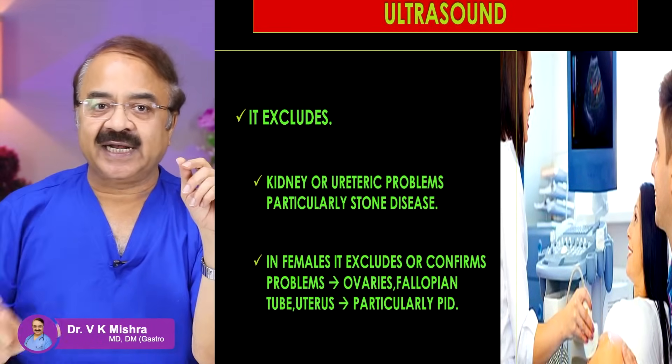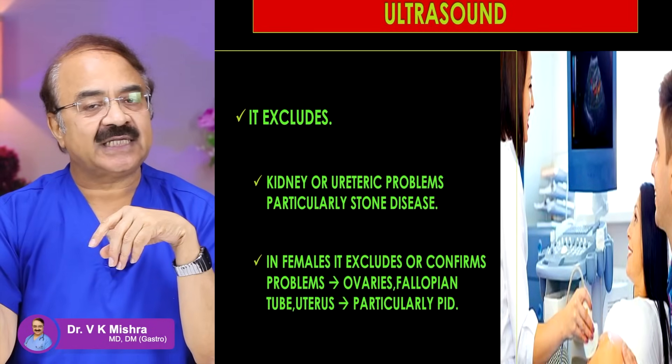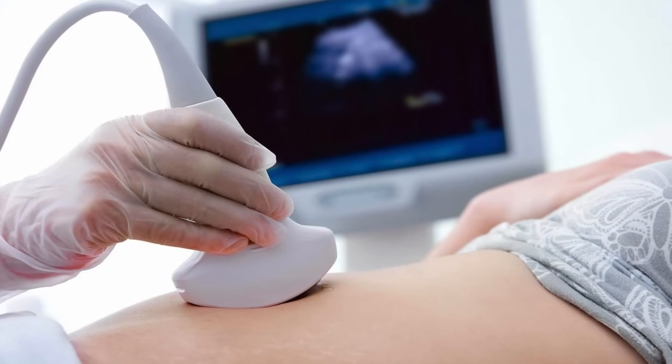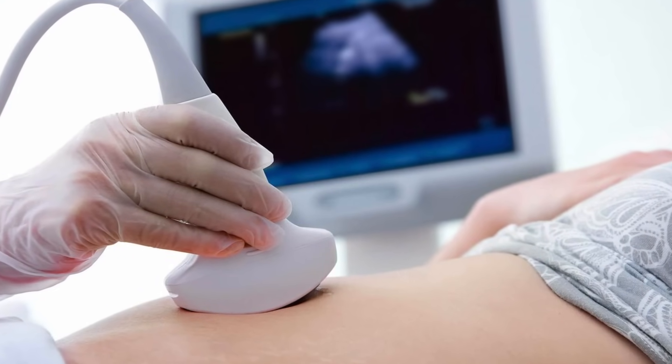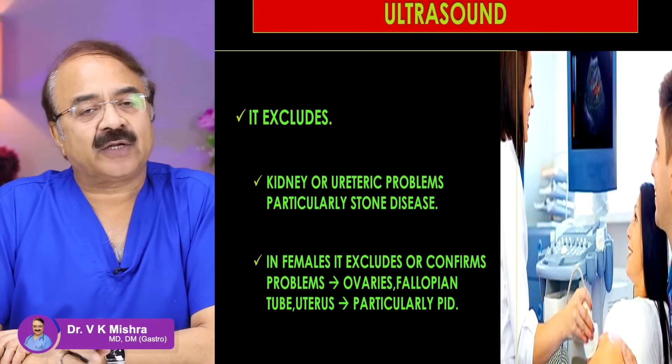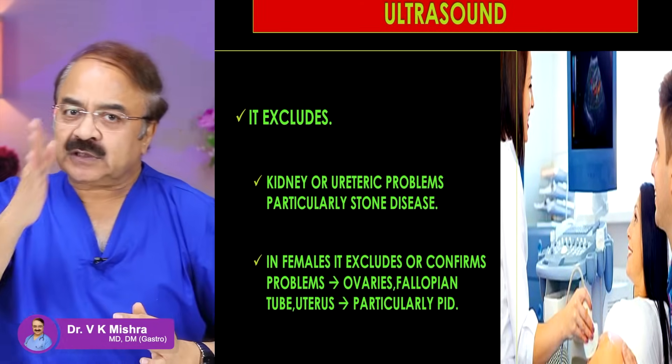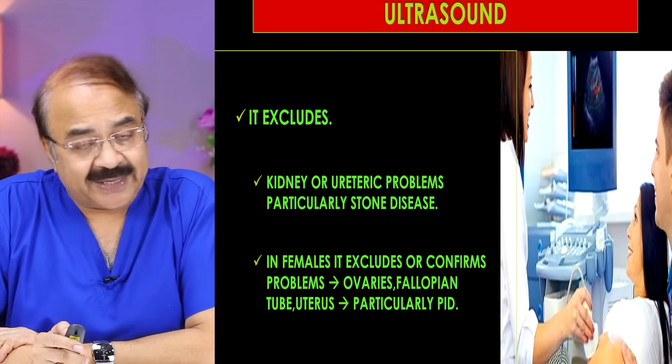यह बात सही है कि अगर ultrasound करने में appendix दिखाई नहीं दे रहा है, तो वो exclude नहीं करता कि appendix की problem नहीं है। Not seeing appendix does not rule out any appendicular attack and appendicitis। लेकिन अगर ultrasound करते हैं तो बहुत सारी चीज़ों को exclude भी कर देता है। अगर ureter clear है तो मालूम है यह pain kidney, ureter, या urinary bladder से नहीं आया। अगर ovaries, fallopian tube, uterus बिल्कुल normal है तो मालूम है यह attack इन organs से नहीं आया - particularly pelvic inflammatory disease। तो ultrasound appendicitis को confirm भी करता है और बहुत सारी दूसरी बीमारियाँ जो appendicitis को mimic करती हैं, उनको exclude भी करता है।